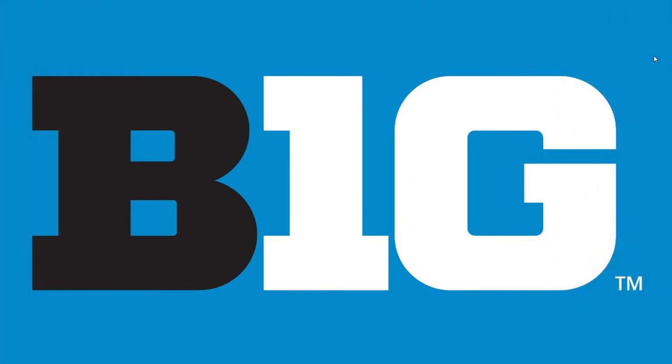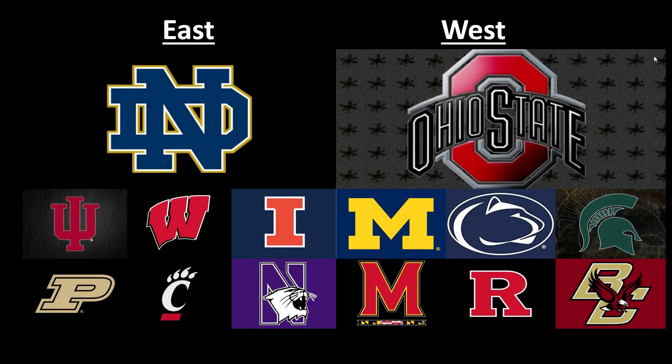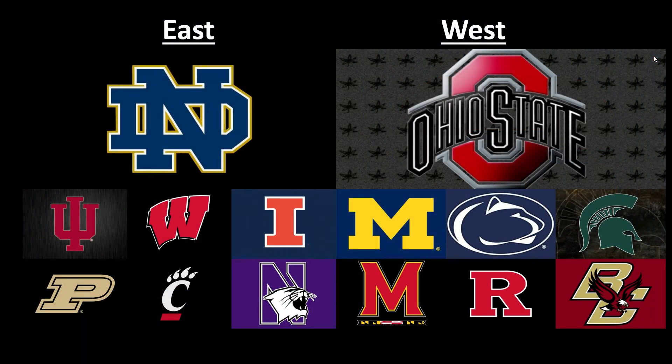Next up is the Big 10 — interesting, especially with the 12-team playoff coming. I added Notre Dame to the Big 10 and put them in one division with Indiana, Wisconsin, Illinois, Purdue, Cincinnati, and Northwestern. I added Cincinnati from the AAC just because I needed to keep it balanced, and I think Cincinnati could be a pretty good program that would benefit from being in the Big 10.